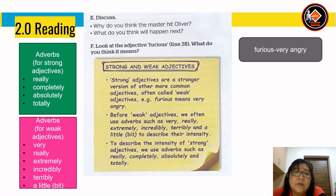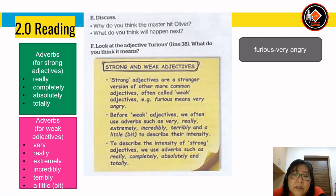Now let's look at strong and weak adjectives. Strong adjectives are a stronger version of other more common adjectives, often called weak adjectives. For example, furious means very angry. Before weak adjectives, we often use adverbs such as very, really, extremely, incredibly, terribly, and a little or a little bit to describe their intensity. To describe the intensity of strong adjectives, we use adverbs such as really, completely, absolutely, and totally.